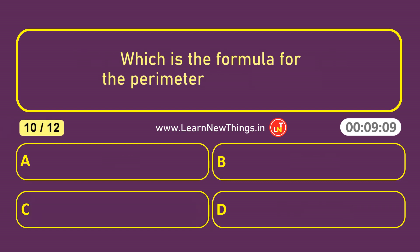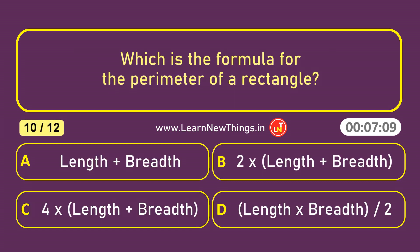Which is the formula for the perimeter of a rectangle? 2 into length plus breadth.